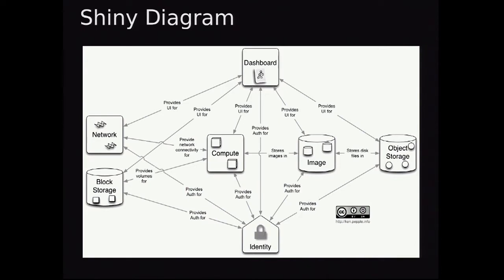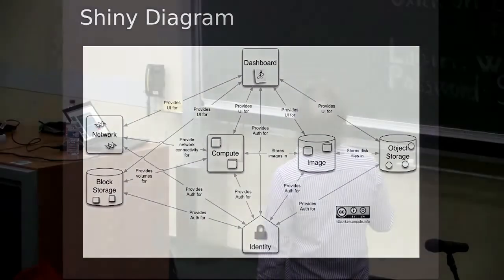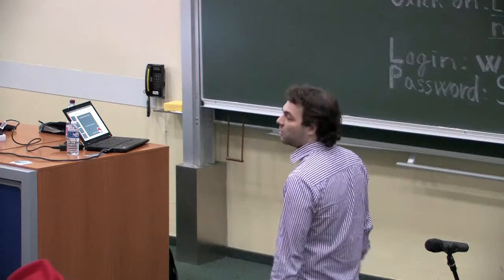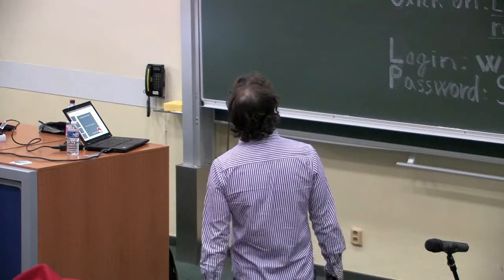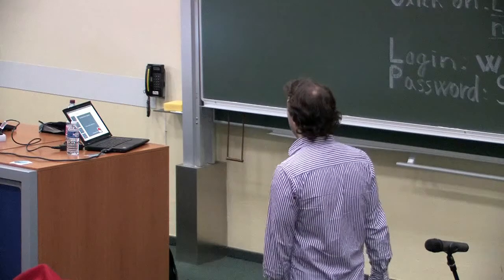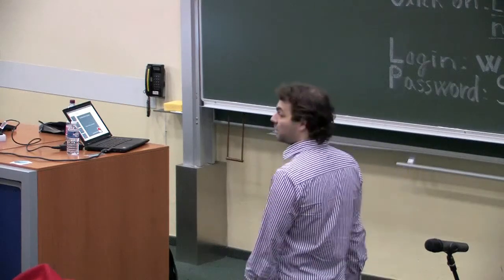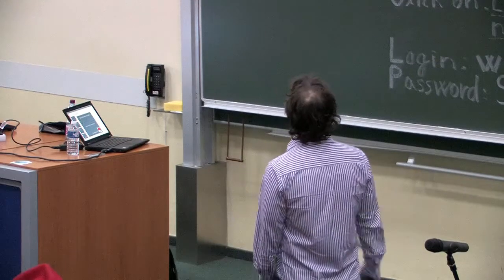There's a nice diagram that may be helpful since we'll be talking about software architectures — it gives you a feel for what the abstractions are in the system. We have identity here, then Nova that talks to Glance to get images, mounts volumes, does networking, and then there's the dashboard for the user to use the cloud.